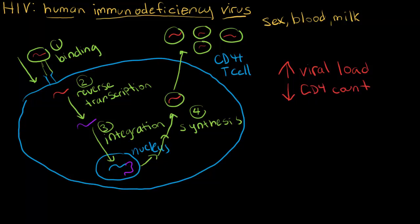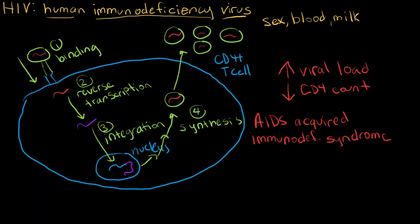If the number of CD4 cells gets very low, that's when we say the person has AIDS — acquired immunodeficiency syndrome. AIDS is really the late stage of HIV infection. If the person is treated earlier and the viral load is kept in check, they may not progress to AIDS.